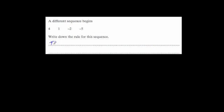Next question — here's a different number sequence which begins 4, 1, -2, -5. Write down the rule for the sequence. The sequence starts with 4 and you're subtracting 3 each time. So the rule is: the sequence begins with 4 and decreases by 3 each time.